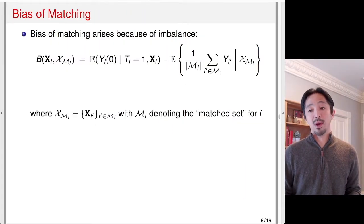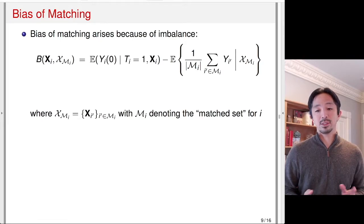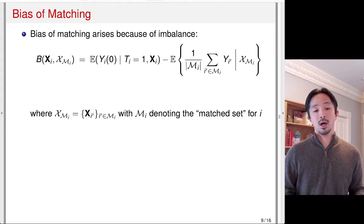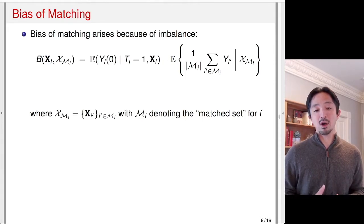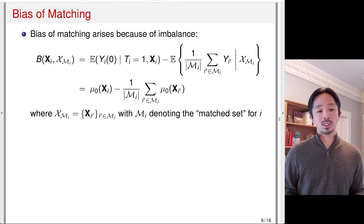Let's consider the bias of matching. Bias arises because of remaining imbalance — even after matching, unless you have exact matching, there will be a difference between the treated and matched control groups, so some bias may remain. The bias term is: conditional on a particular value of X for a treated unit, what is the average potential outcome under the control condition, estimated using the mean of observed outcomes among matched control units. The match set for treated unit i is denoted as M_i.